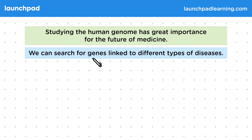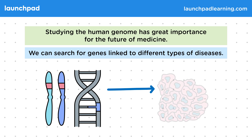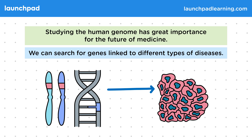We can search for genes linked to different types of diseases. For example, if we have a particular type of cancer, we might be able to search for the alleles, mutations or flaws in the DNA that are responsible, and then work towards prevention.